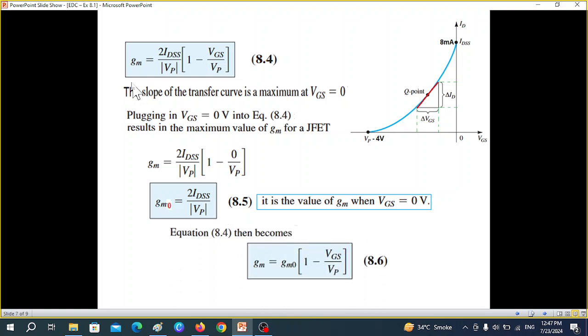So the general equation, this one. Now 2 IDSS over VP, we can write it that GM0. So this will be the general equation now.